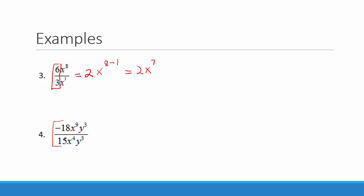In example 4, we simplify the coefficient fraction negative 18 over 15. Since 18 and 15 are both divisible by 3, negative 18 divided by 3 is negative 6, and 15 divided by 3 is 5. Then we subtract exponents on like bases: for x, we have 9 in the numerator and 4 in the denominator, so 9 minus 4 equals 5. For y, we have y to the third over y to the third, which equals 1. So our simplified answer is negative 6 over 5 times x to the fifth.